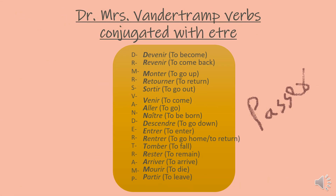As I was saying, when to use être and when to use avoir: most verbs are conjugated with avoir, but there are some exceptions. With être, there's a simple way to remember — the Dr. Mrs. Van der Tramp verbs. Using the initials, you can remember: devenir, revenir, monter, retourner, sortir, venir, aller, naître, descendre, entrer, rentrer, tomber, rester, arriver, mourir, partir. These are the only verbs conjugated with être, plus passer, which is also conjugated with être. All other verbs are conjugated with avoir.